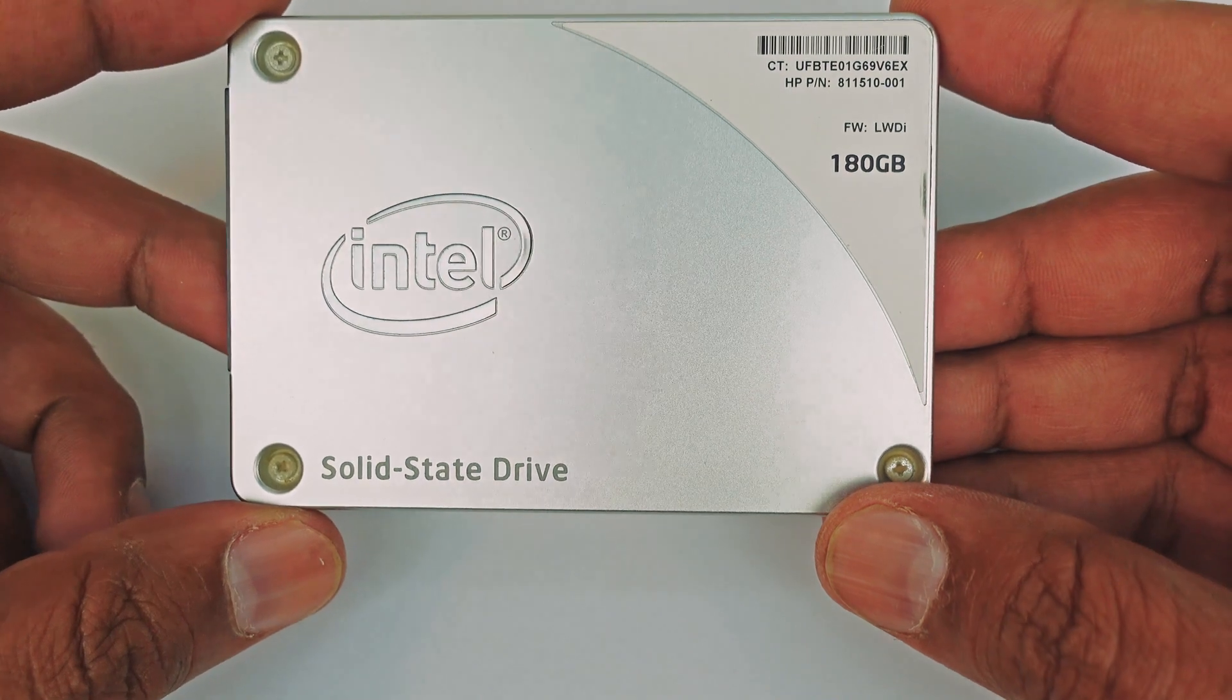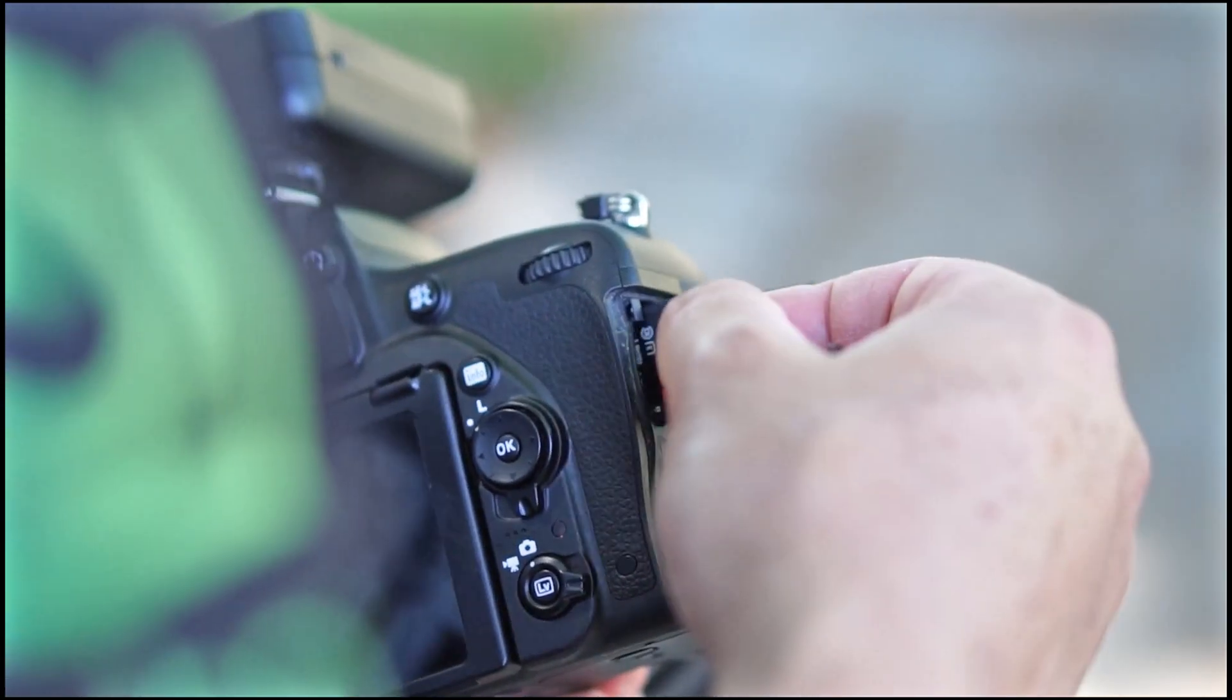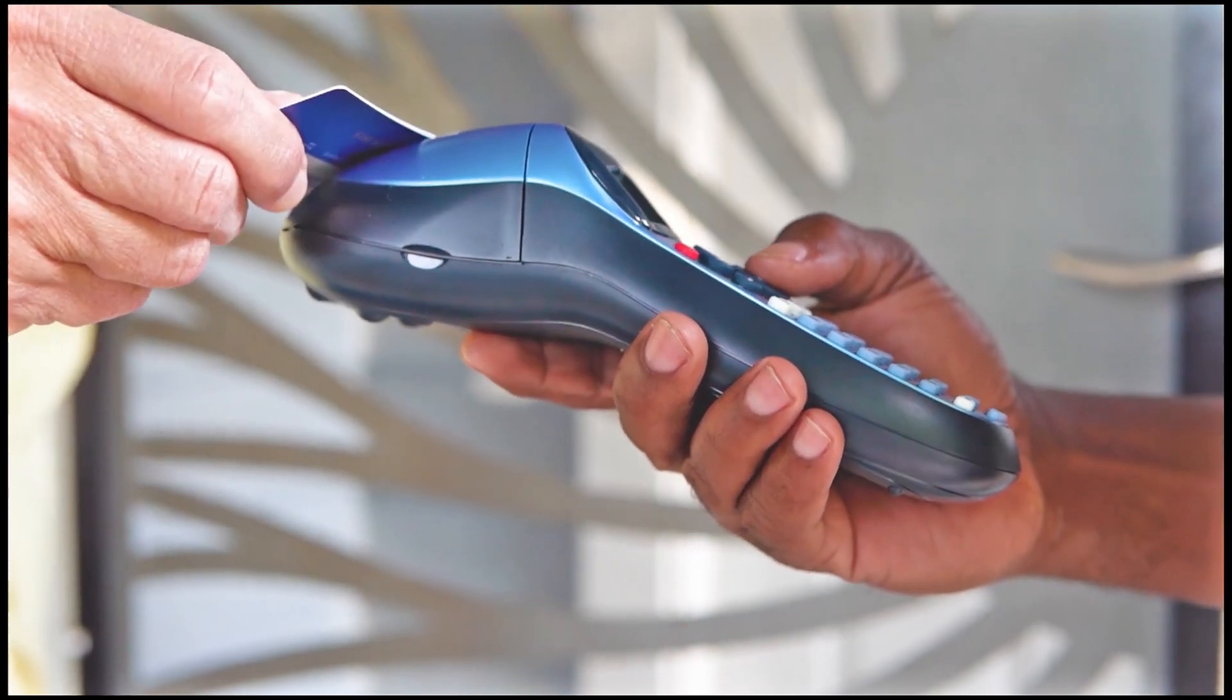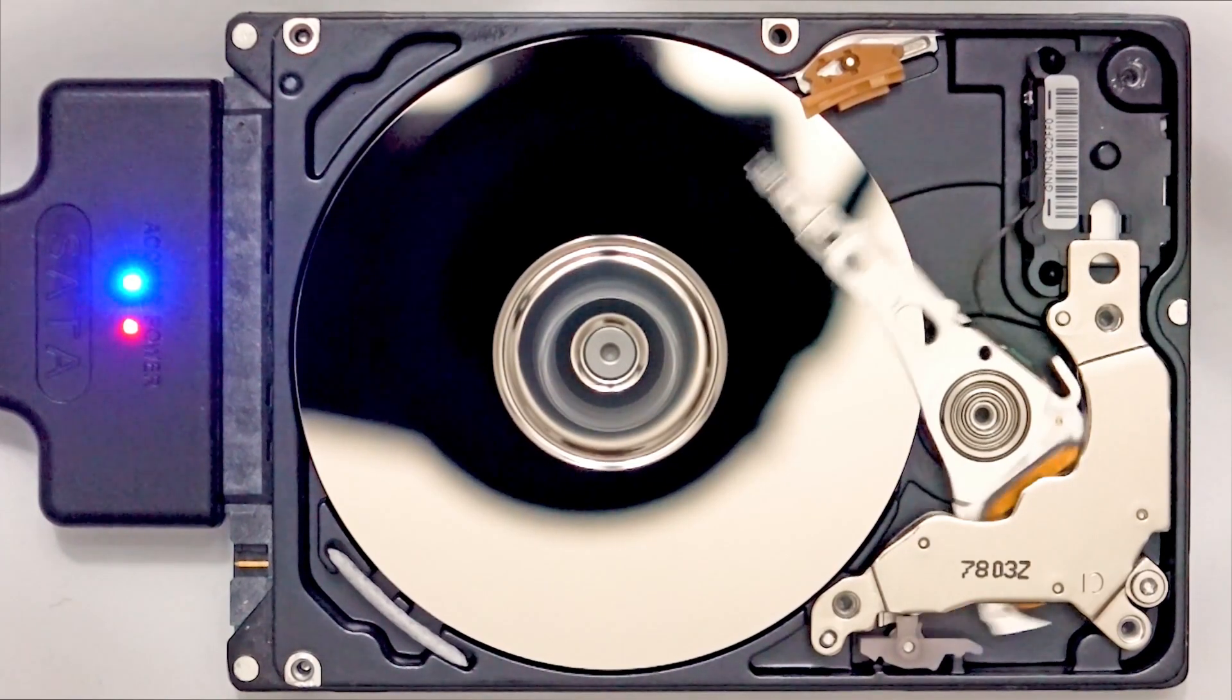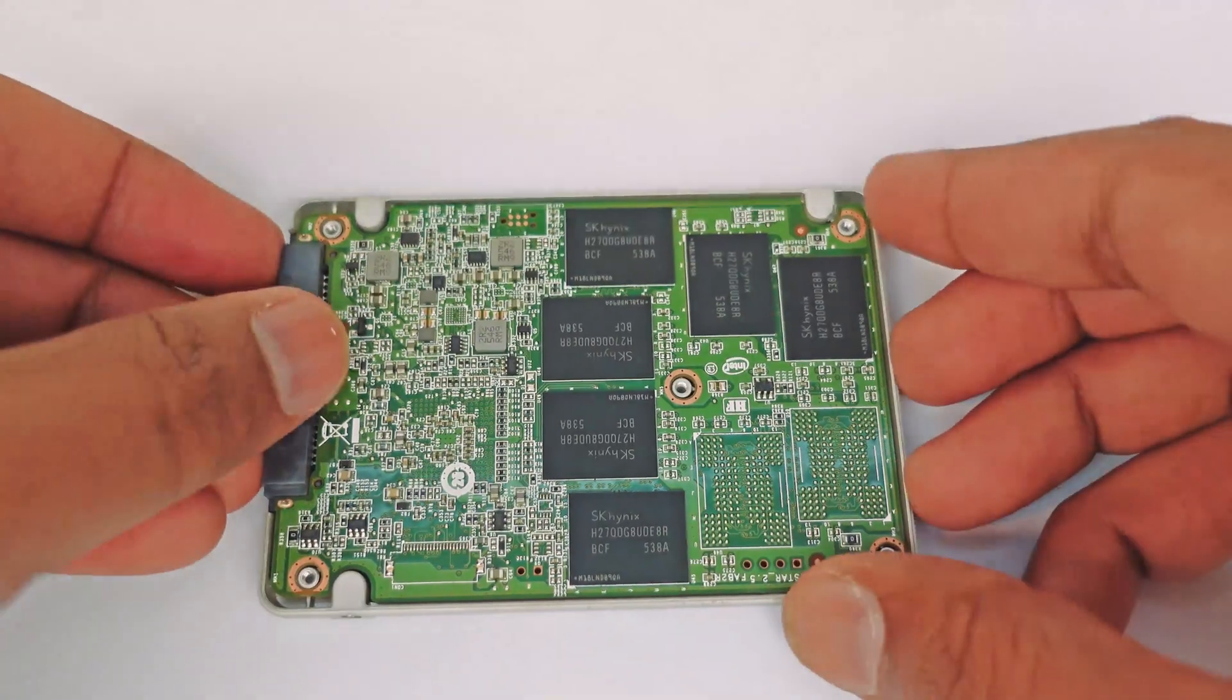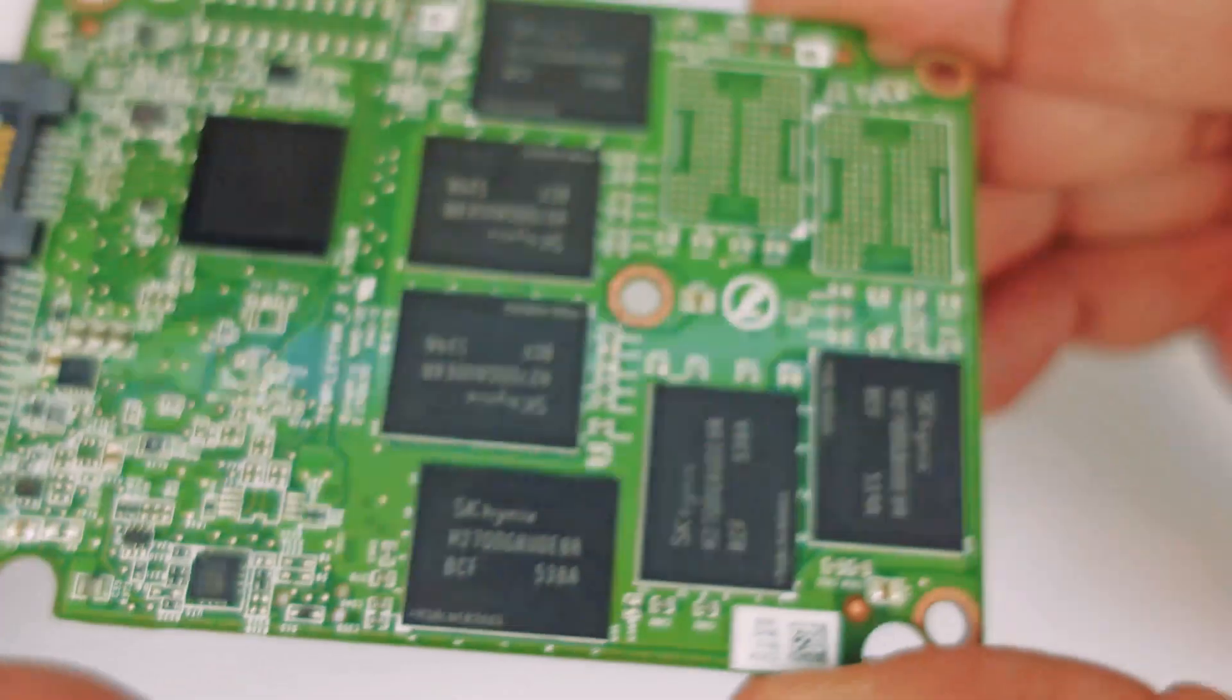Flash memory is used in SSDs, USB pen drives, SD cards, mobile phones, and many other digital devices. Because it has no mechanical parts and is completely static, it has many advantages over other types of memories.